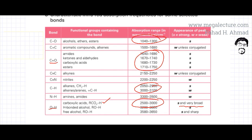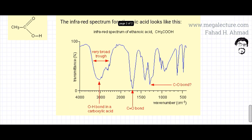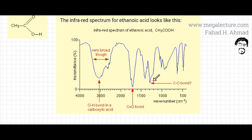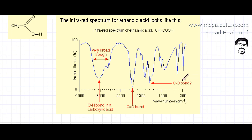There were other bonds in ethanoic acid. One was C–O single bond around 1,000 to 1,300, which would also give a strong absorption. Looking at the infrared spectrum, you would notice a strong absorption around 1,300. But remember, things get very confusing because lots of bonds would be absorbing frequencies within that range, so you would not be sure — which is why there's a question mark. You're not going to be sure whether this absorption is because of C–O or not.